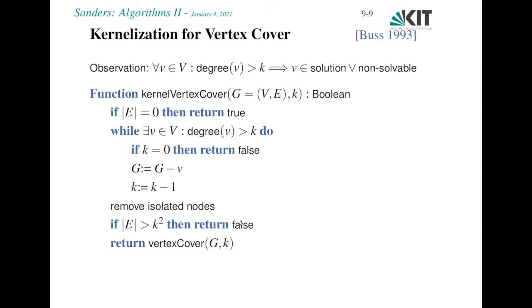Let's look at slightly more sophisticated algorithms for vertex cover. Here we look at a first very simple kernelization. Observe that if you have any vertex of degree larger than k, then either v is in the solution, or the problem is not solvable with size k. Because suppose we do not put v into the solution, then we somehow have to cover all its incident edges. But since there are more than k of them, we cannot do that with k vertices.